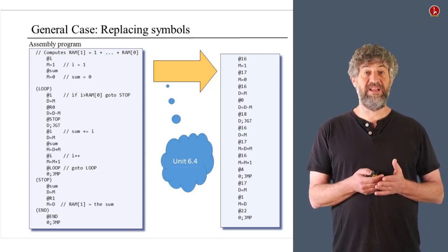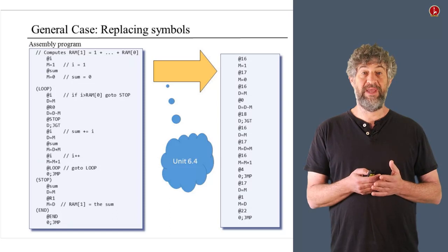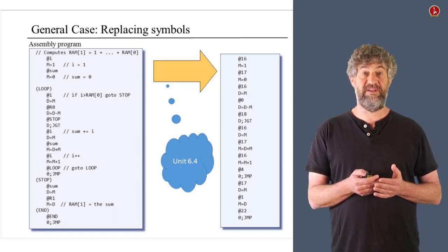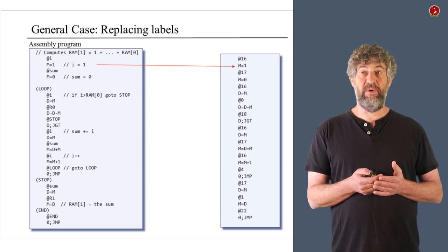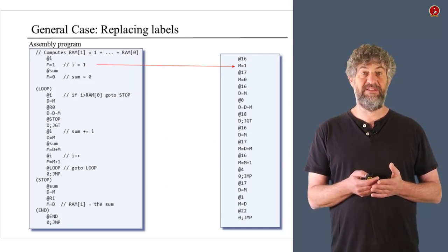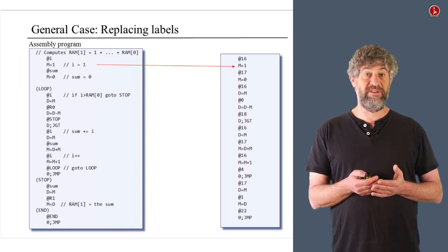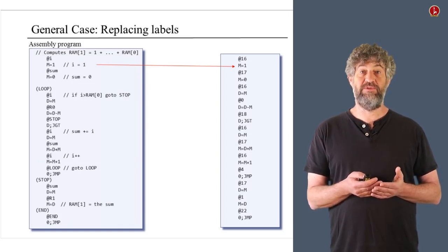So this kind of translation, you go again line by line. But now you have to figure out the various kind of symbols that you need to handle. So in some cases of commands, for example, the command M equals 1 that you see here, no translation is necessary because no symbols are involved. You just copy it.